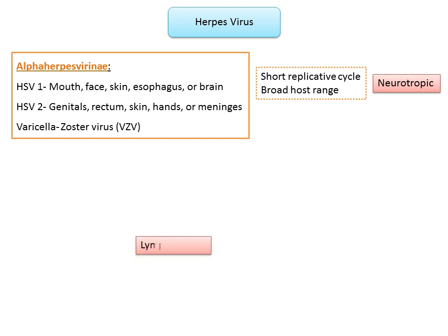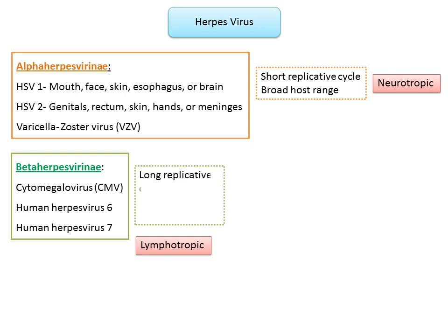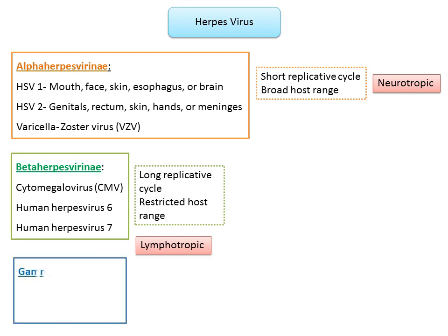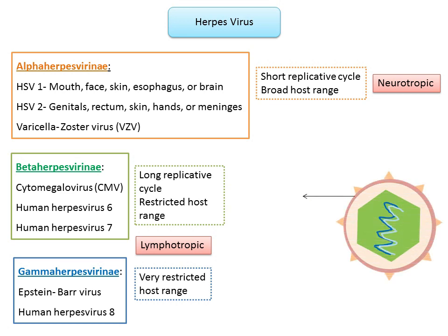The other two groups — beta herpesvirinae and gamma herpesvirinae — belong to the lymphotropic group. The beta group includes cytomegalovirus, human herpesvirus 6 and 7, with a long replicative cycle and restricted host range. The gamma herpesvirinae include Epstein-Barr virus and human herpesvirus 8, with a very restricted host range.